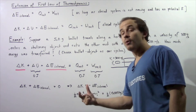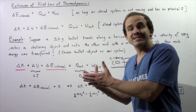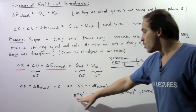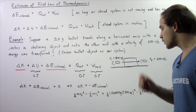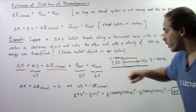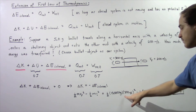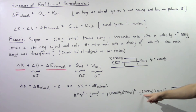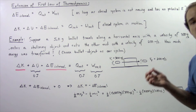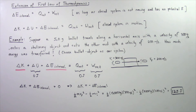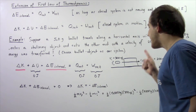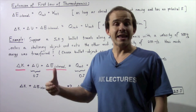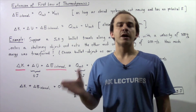Whatever the bullet loses in kinetic energy, that energy is gained by the internal energy of the bullet-block system. Let's find the change in kinetic energy: one half times 0.005 kilograms times (300 m/s)² minus one half times 0.005 kilograms times (200 m/s)², which gives us 125 joules. This means the bullet loses 125 joules of kinetic energy, and that energy is gained as internal energy of the block and bullet system — transferred from kinetic energy to internal energy.